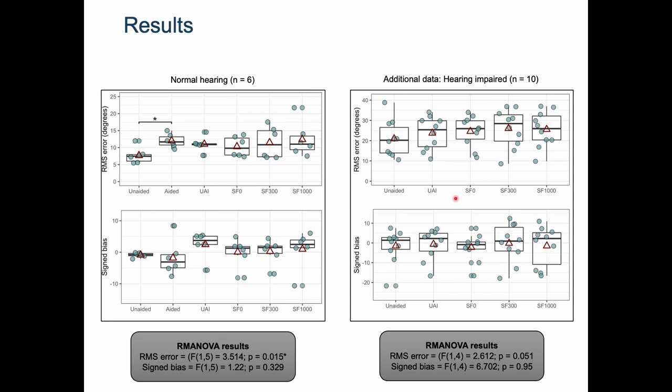Here is the additional data collected in our lab on hearing impaired participants who have bilateral mild to moderately severe sensorineural hearing loss. Again, there is no significant difference between aided and other broadband filtering conditions.